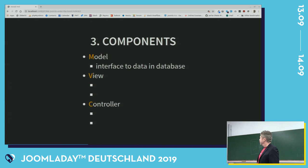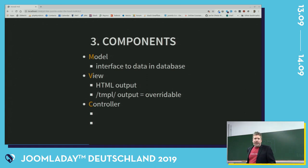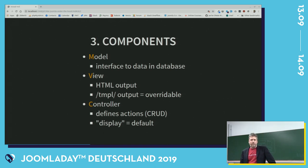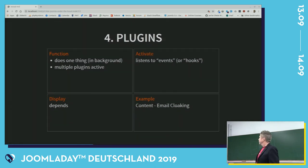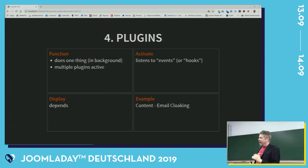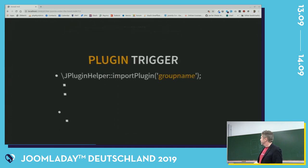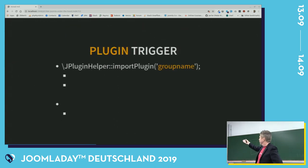It's possible to override the output, and they are triggered by 'option=com_' the name of the component. Components have model-view-controller inside. The model is the interface of the database. HTML output is the view, and you can override it by putting it in the HTML folder of your template. The controller defines what to do — the CRUD actions. Display is the default if you don't do anything. Now, plugins: a plugin does one thing in the background. You can have multiple plugins, and they load in the order defined in the Joomla plugin backend.